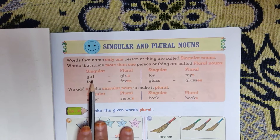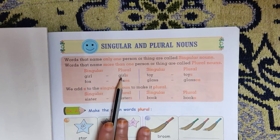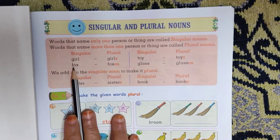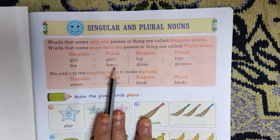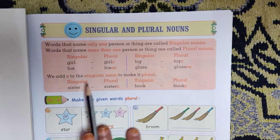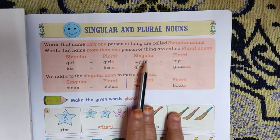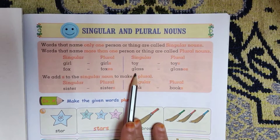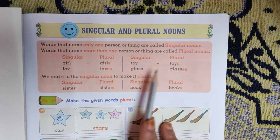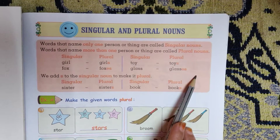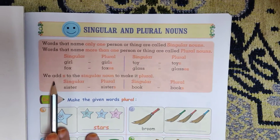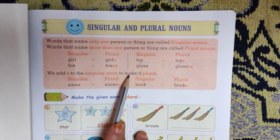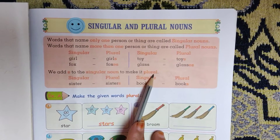See here — singular noun. Girl, girls. Fox, foxes. Singular, plural. Toy, toys. Glass, glasses. We add S to a singular noun to make it plural.